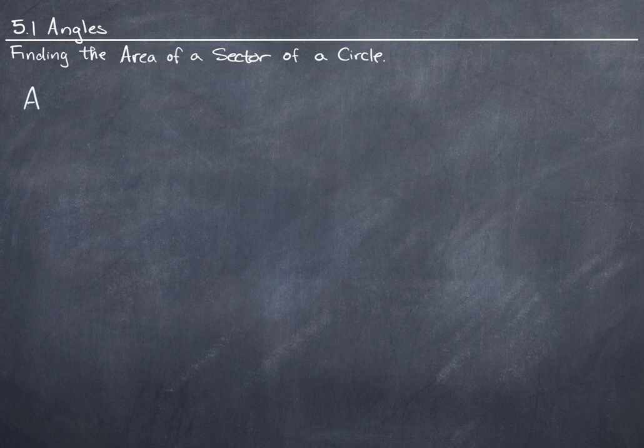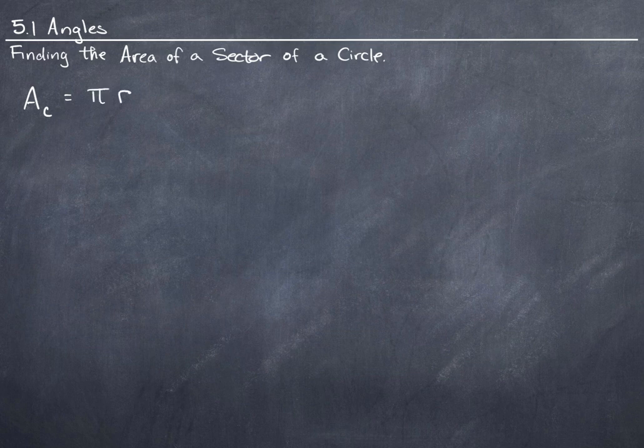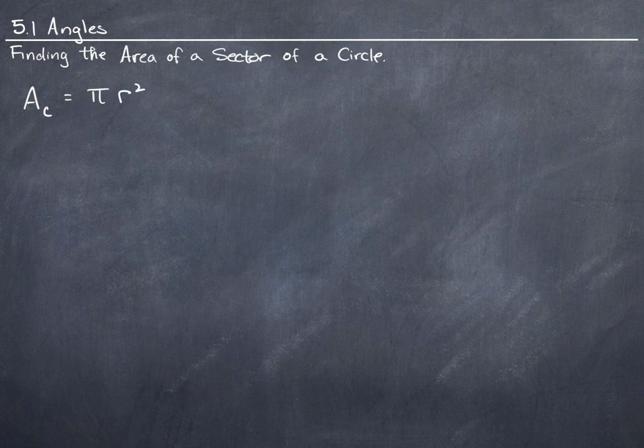Do you remember how to find the area of a circle? It's pi times the radius squared. And of course, that's the radius of the circle whose area you're trying to find, right?